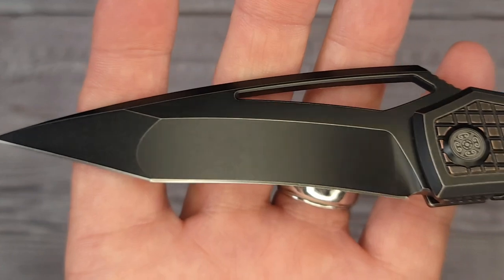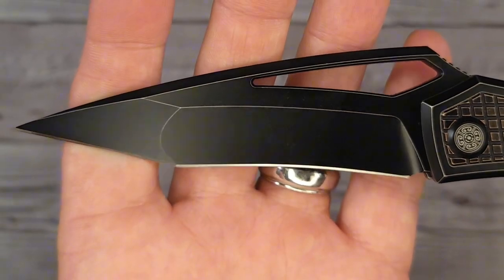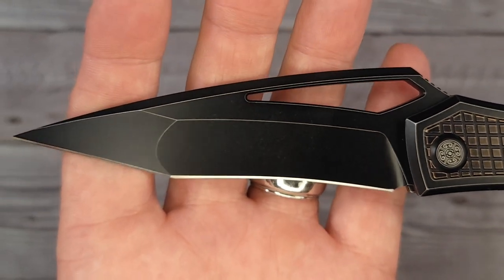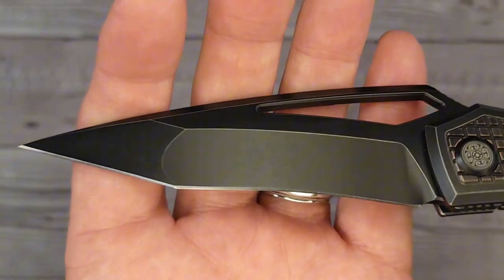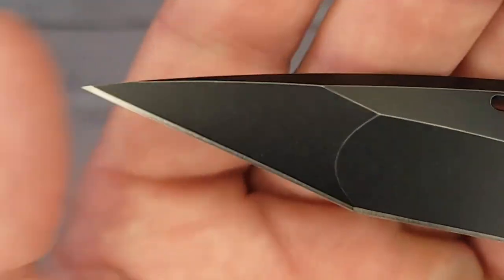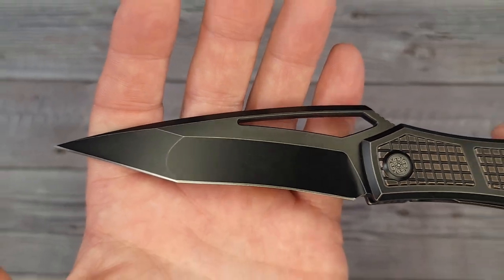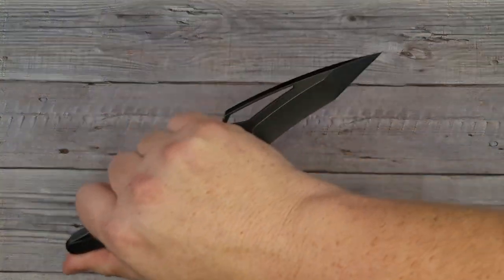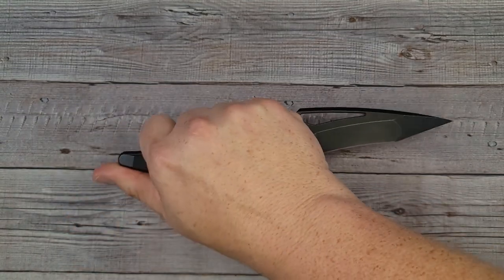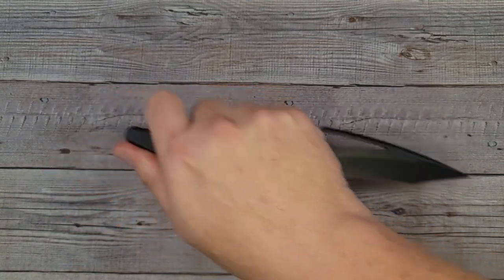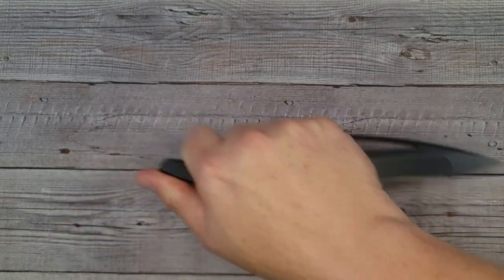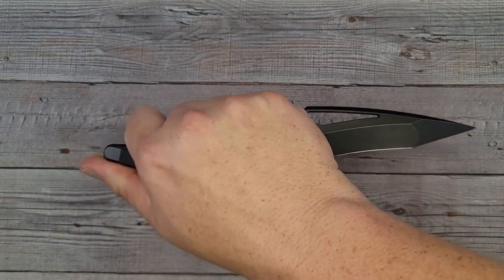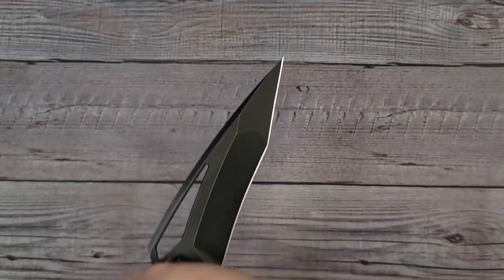This is 8.7 inches long. This blade is 3.85 inches of black stonewash M390, compound hollow grind. And yeah, it's pointy. Wow, that is pointy. This knife is designed for piercing and it is also designed to be reverse gripped just like this. This is how it is held in a self-defense situation.